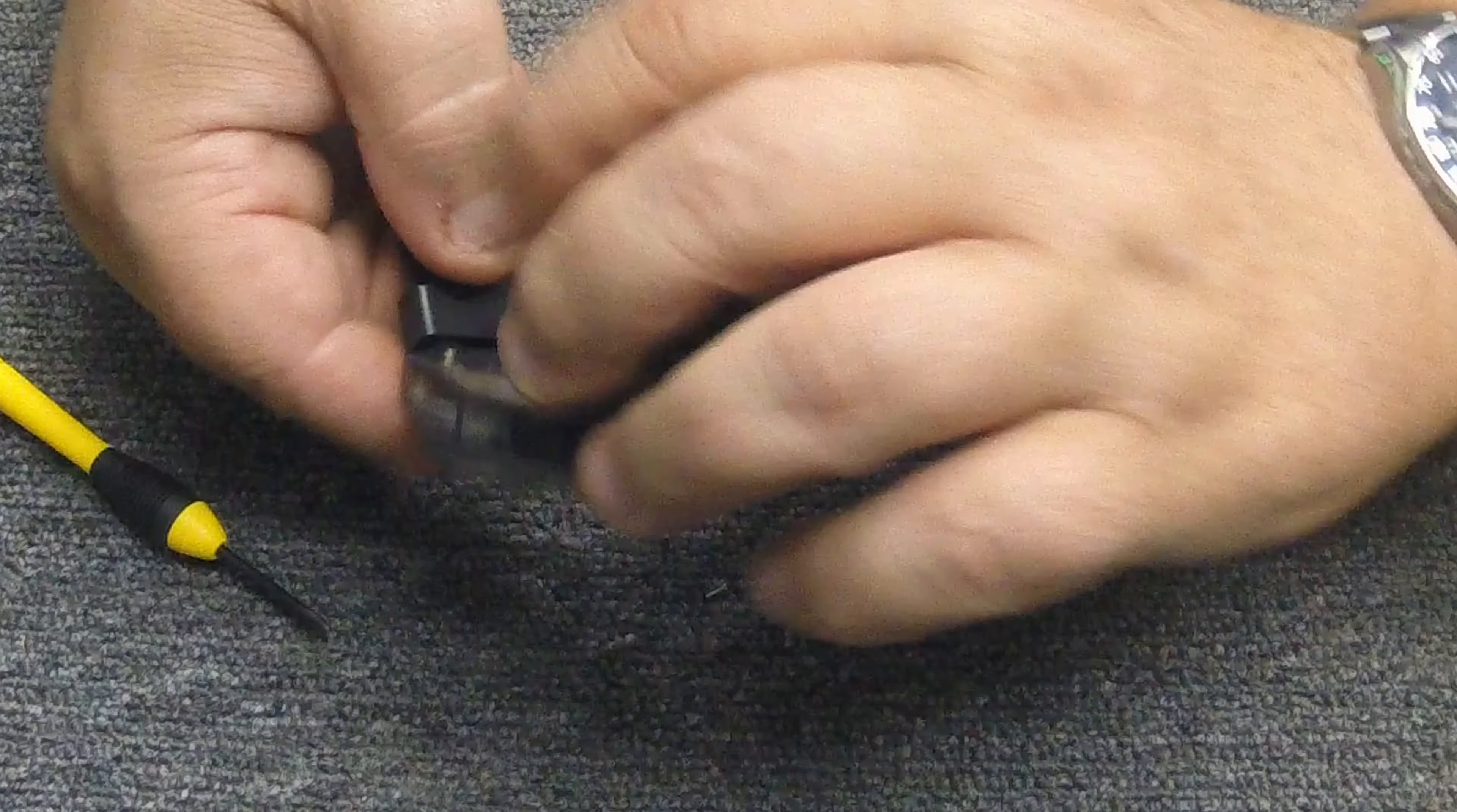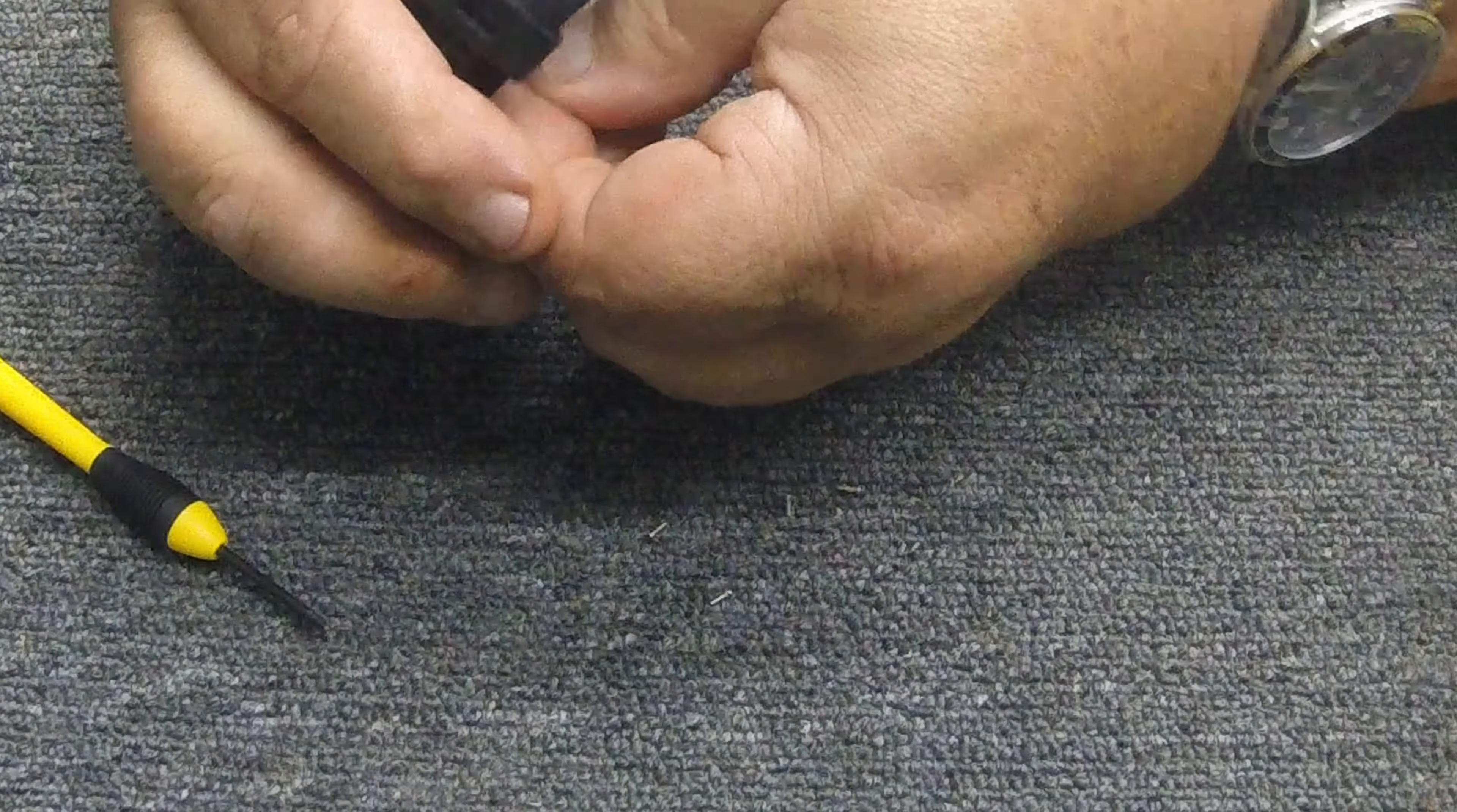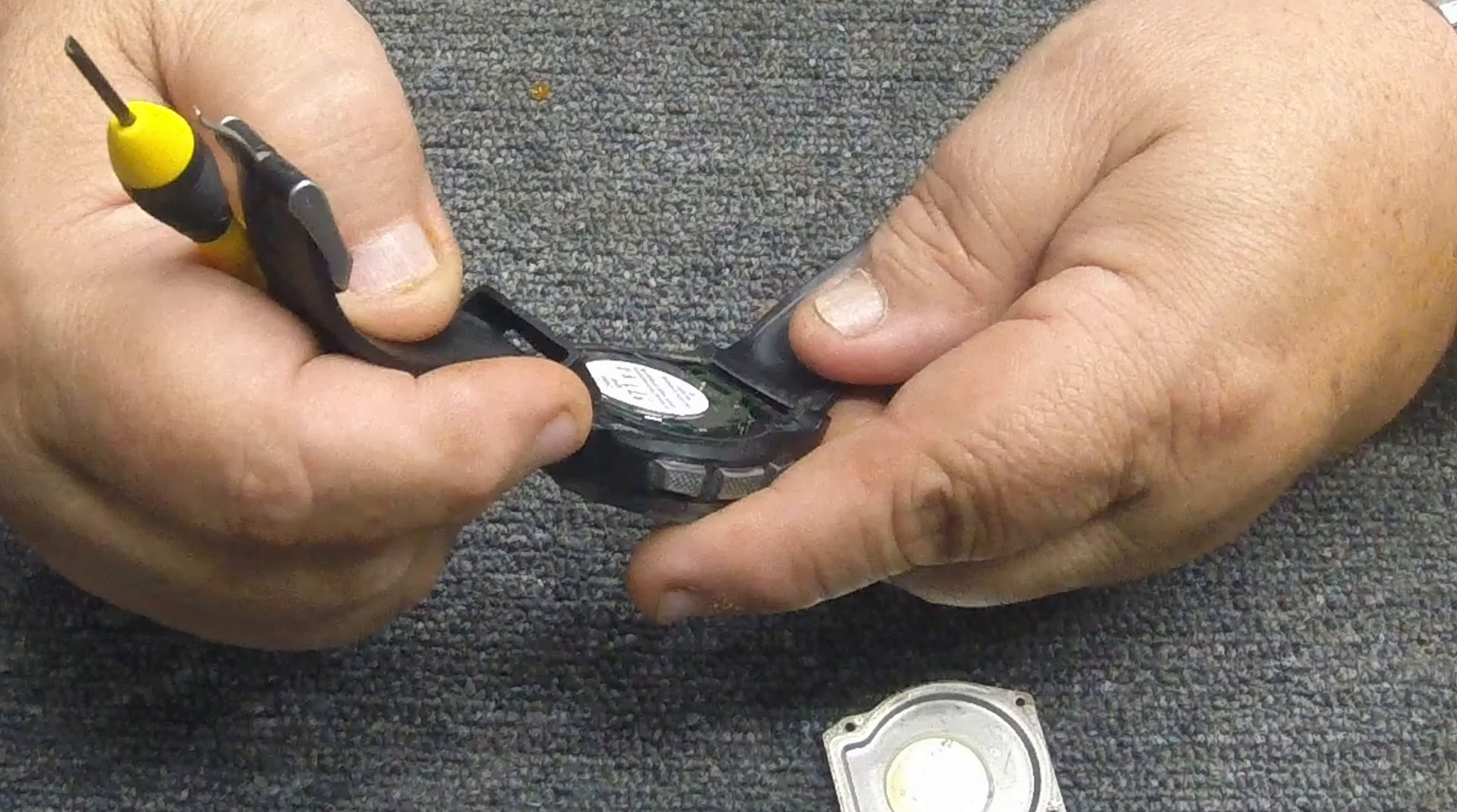Let's get these screws out of here and see if we can get this back off. Well I'm going to need a little flat blade for that. She's got a good seal on her, that's probably a good thing. Hopefully she didn't get wet. That's about the only thing that kills these things is getting wet. Yeah, it doesn't look like it got wet on the inside.